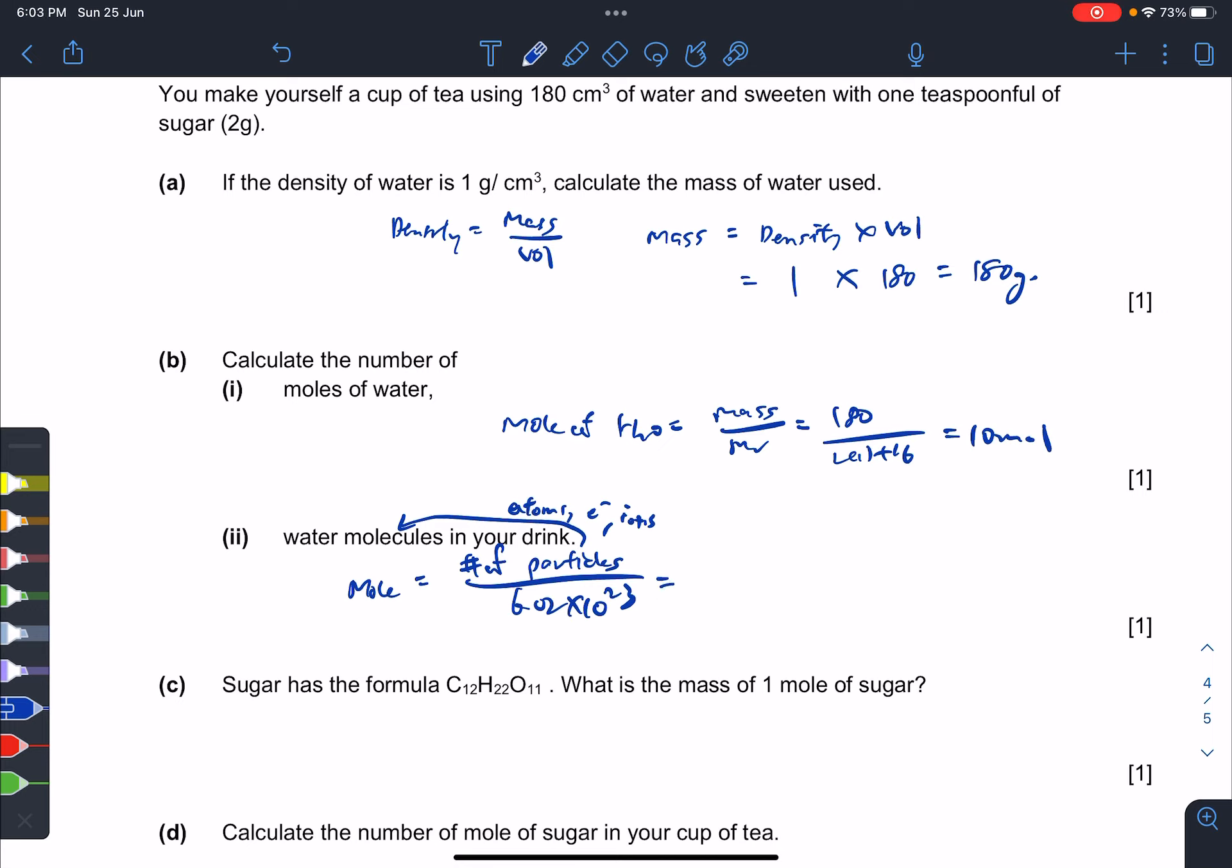If you recall, the formula is mole equals number of particles over 6.02×10²³, the Avogadro constant. Particles means molecules, atoms, electrons, ions. Your mole of water is not straightforward yet, so you adjust: number of H2O molecules equals the mole times Avogadro's constant, 6.02×10²³. Three significant figures.